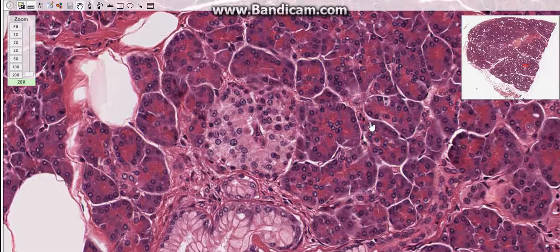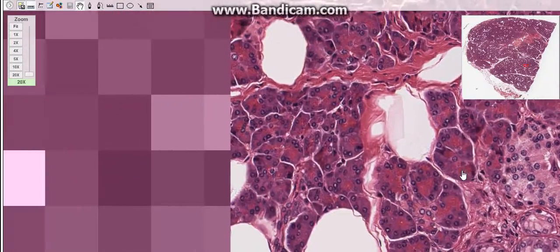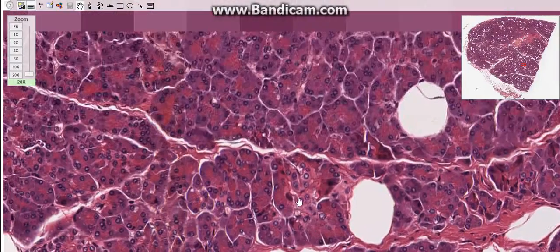Let's jump to the third type, or the fourth type of the islets. There are the PP cells.